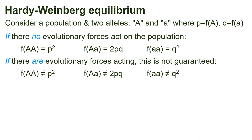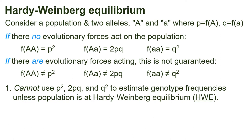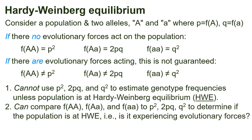This has two important consequences. First, we cannot use P squared, 2PQ, and Q squared to estimate genotype frequencies unless the population is at Hardy-Weinberg equilibrium, sometimes abbreviated HWE. Second, we can use this to learn about a population — we can compare the frequencies of the genotypes to P squared, 2PQ, and Q squared to determine if the population is at HWE or not. In other words, is the population experiencing evolutionary forces? If the observed genotype frequencies match those predicted from the equations, then the population is almost certainly at HWE and not experiencing evolutionary forces like selection or assortative mating. On the other hand, if they do not match, then the population must be experiencing one or more evolutionary forces.